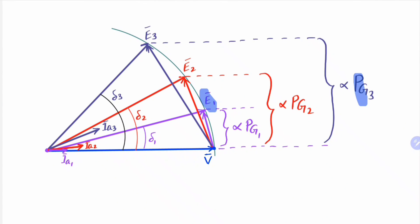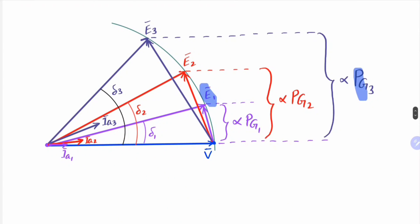One more point we can observe from this diagram: as the governor set point increases — that is, as mechanical input to the alternator increases — the power factor angle between armature current and terminal voltage V also increases, meaning power factor decreases. In this case the load angle δ between excitation emf E and terminal voltage V is positive, and the armature currents are leading. This means the system is operating at leading power factor, hence consuming reactive power — the alternator is supplying active power but consuming reactive power.